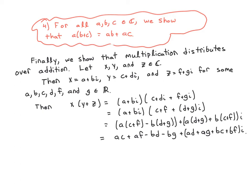So now we arrive at the last axiom: distributivity. How are multiplication and addition related? We have three complex numbers, and we want to show A times (B plus C) equals AB plus AC. In our case these are complex numbers, so we call them X, Y, and Z. Each has a real and imaginary part, so let's declare: X = A plus BI, Y = C plus DI, and Z = F plus GI. Let's do the calculation: what is X times (Y plus Z)? Well, it's X times (Y plus Z) — substituting in.